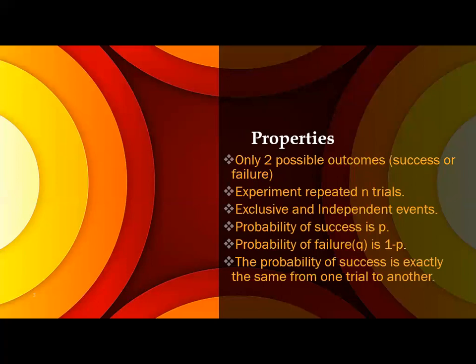Next one: exclusive and independent events. Since you are experimenting n trials, the first experiment will not affect the second experiment and so on. If success happens, failure cannot happen. If failure happens, success will not happen. It is exclusive.